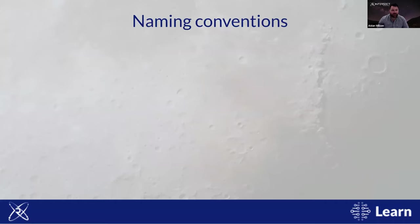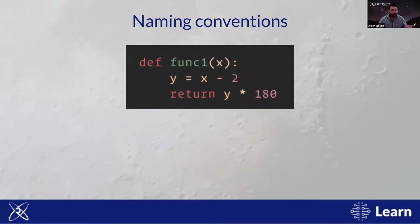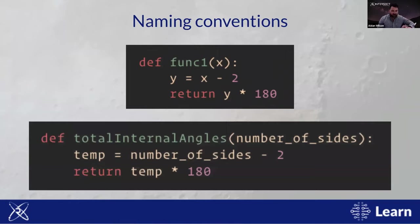Here's a function written perfectly well from a computer's perspective — syntactically correct, no errors, will generate output — but from a human perspective it's not well written. We'd have to work through it mathematically to figure out what it does. Let's rewrite it using mnemonic variable and function names. With good naming, you can see immediately — without running it — that this is a simple program to find the total internal angles of a polygon with a given number of sides: a square has 360 degrees, a triangle has 180, and so forth.